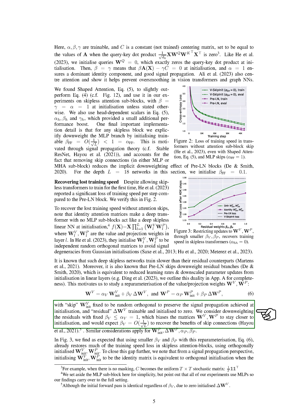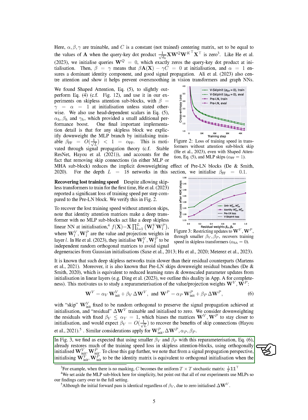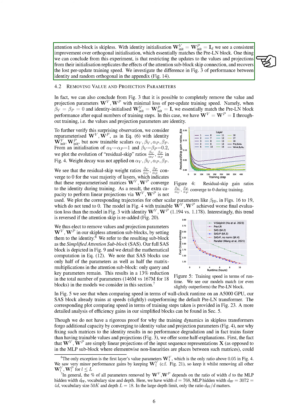To recover this lost speed, we reparameterized the value and projection weights. We fixed the initial weights to be random orthogonal to preserve the signal propagation achieved at initialization, and made the residual weights trainable and initialized to zero. We also downweighted the residuals, which biases the matrices to stay closer to initialization. We found that using smaller beta values with this reparameterization already restores much of the training speed loss in skipless attention blocks. To further close this gap, we initialized the initial weights to be the identity matrix, which led to a consistent improvement, matching the pre-LN block.